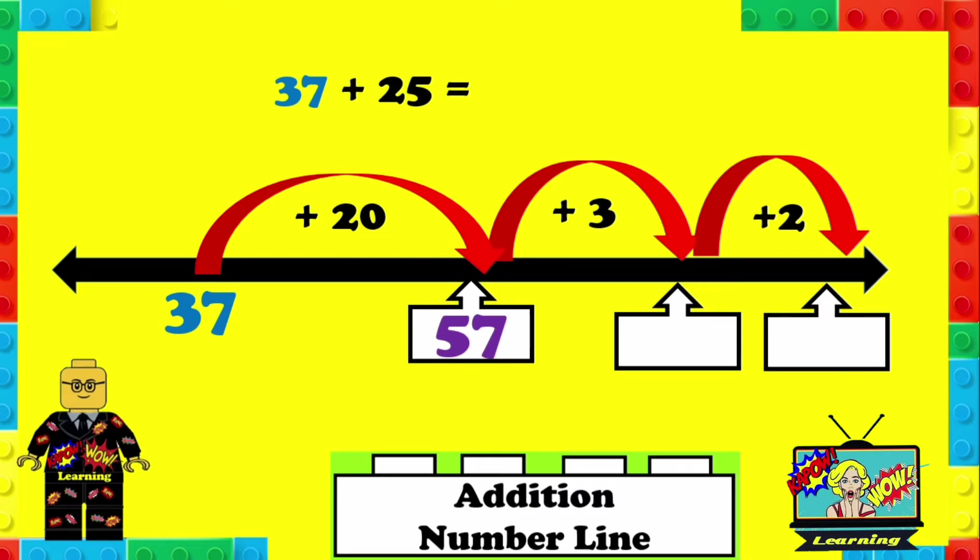We're going to add 3. We're going to split that 5 up because if we add 3 to 57 it gives us 60, and we've got 2 left from the 5. 60 plus 2 equals 62, so 37 plus 25 is 62.